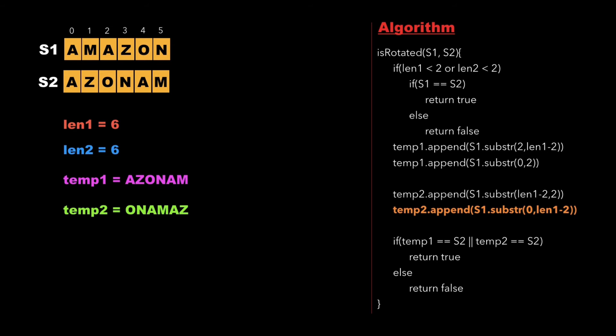So we have a string temp2 as onamaz and then we check whether temp1 is equal to s2 or temp2 is equal to s2. Since we have the string temp1 as equal to s2 therefore we return true.